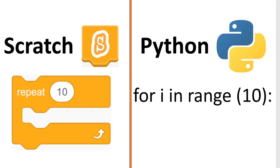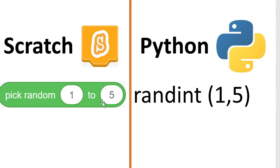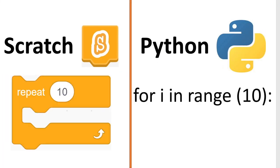The next example is with loops. In Scratch we've got 'repeat 10 times', and in Python it's a bit different — we use 'for i in range' and then type in whatever number we want in brackets. It doesn't have to be the letter i; it can be 'for j in range' or whatever. My final example is with the random block. We've got 'pick random 1 to 5' in Scratch, and in Python we just type 'randint(1, 5)'. If you type this in Python by itself it won't work — you need to import the random function first, so just be aware of that.